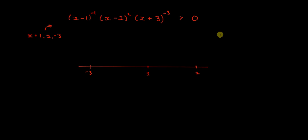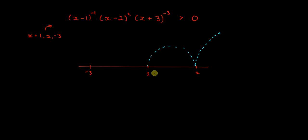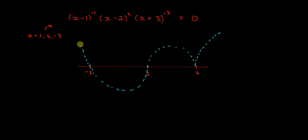Starting from the top right corner: x equals 2 comes from (x-2)², an even power, so the curve touches but does not cross. Next is x equals 1 from (x-1)⁻¹ — power of 1 is odd, so the curve crosses. Then x equals minus 3 from (x+3)⁻³ — power of 3 is odd, so the curve crosses again.